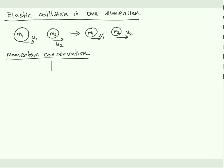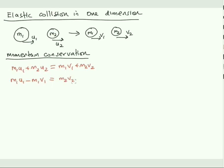By writing the equations for momentum conservation and kinetic energy conservation, we can get the values for the final velocities. The momentum conservation equation gives us: m1·u1 + m2·u2 = m1·v1 + m2·v2. Taking mass one terms on one side: m1·u1 − m1·v1 = m2·v2 − m2·u2. Call this equation one.